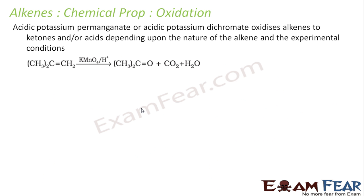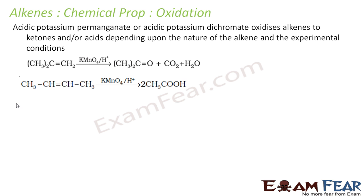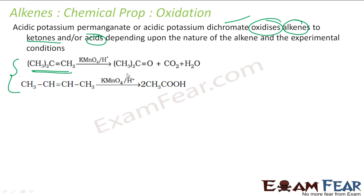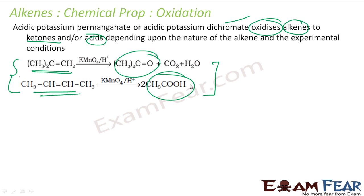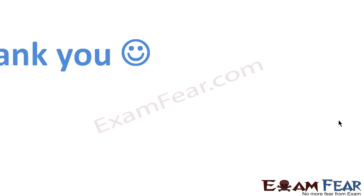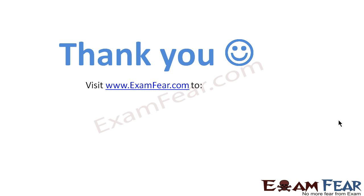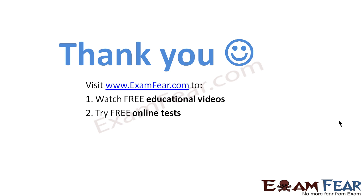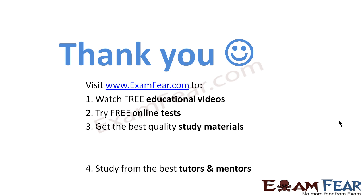Now for oxidation of alkenes with acidic potassium permanganate or acidic potassium dichromate: these reagents oxidize alkenes to either ketones or acids, depending on the nature of the alkene and experimental conditions. We won't study the reaction mechanism for this. Depending on conditions, it will sometimes form a ketone and sometimes form an acid. This overall process is called oxidation — making ketones or acids from alkenes.